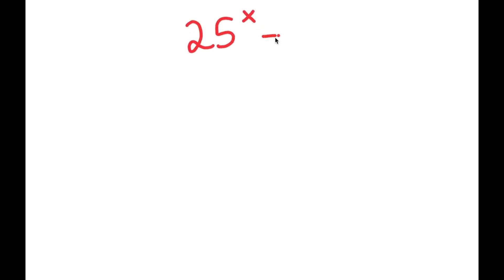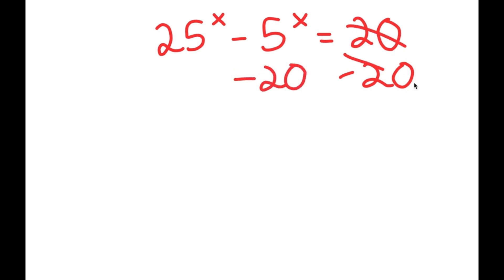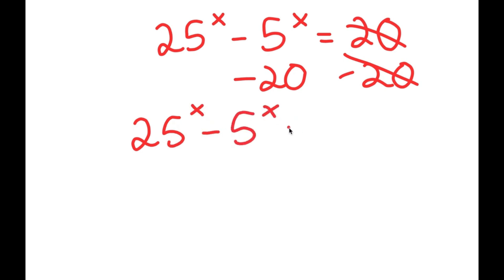In this video, I'm going to be solving the equation 25 to the power of x minus 5 to the power of x is equal to 20. To solve this equation, I'm going to first start by subtracting 20 on both sides. So these two cancel out and I get 25 to the power of x minus 5 to the power of x minus 20 is equal to zero.